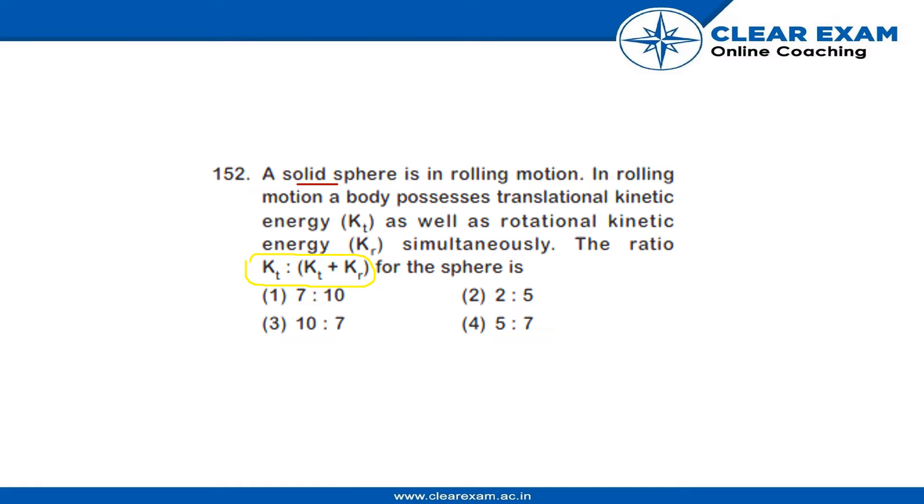So, if this is the summation of KT and KR both, then it is quite obvious that the denominator in all these four options should be greater than the numerator and we can see that third option is ruled out directly.